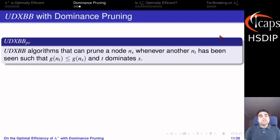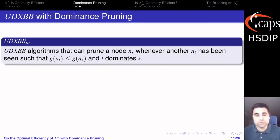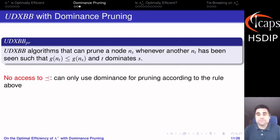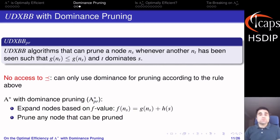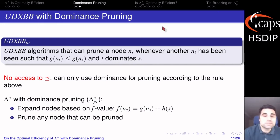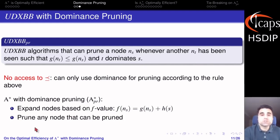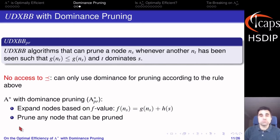We define the family of unidirectional forward search algorithms with dominance pruning as algorithms that can prune nodes according to the dominance rule just described. These algorithms don't have direct access to the dominance relation and can only use it for pruning according to the rule above. A-star with dominance pruning is a subclass of this more general family, characterized by two things: it always expands nodes based on f value, and it must always prune a node whenever it can be pruned — it cannot choose not to prune a node.